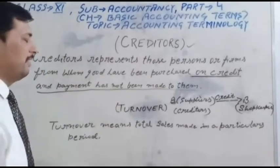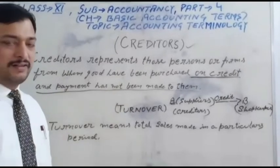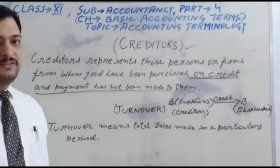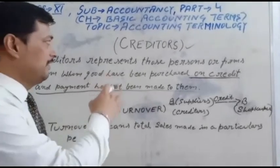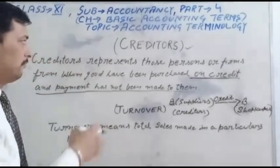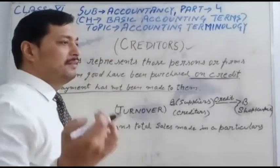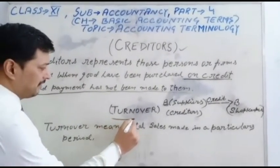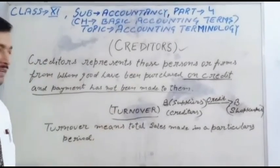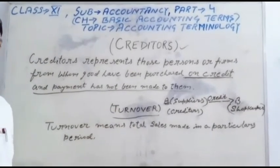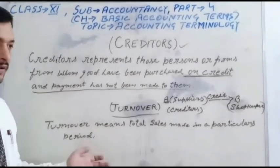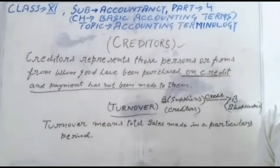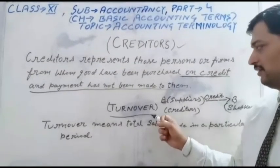But in the future, the amount is due — the amount due to the creditors during the year. So in accountancy, both the terms of debtors and creditors are important. Last accounting term is turnover. Meaning of turnover: total sale made in a particular period is called turnover. When a businessman has done a sale during the accounting period, it is called turnover.